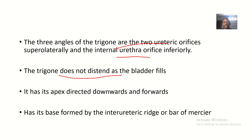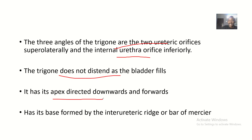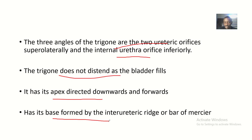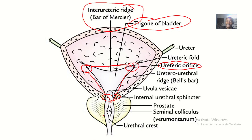The trigone does not distend as the bladder fills, due to that special smooth muscle. Its apex is directed downwards — connecting those ureteric orifices to the internal ureteral orifice forms the apex, which points downward. The base is formed by the inter-ureteric ridge, or bar of Mercier — the line joining the two ureteric orifices.